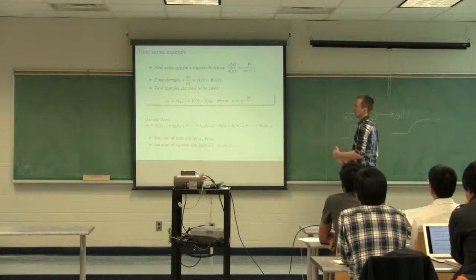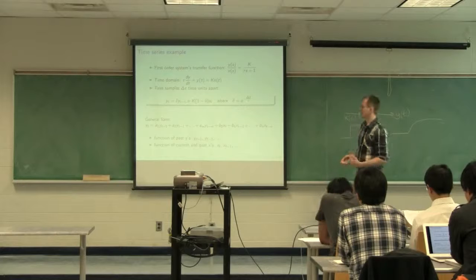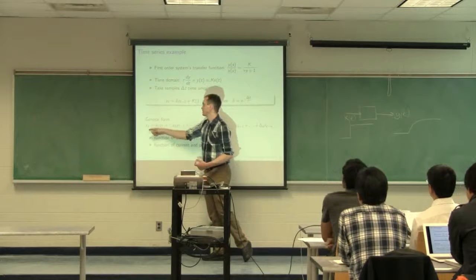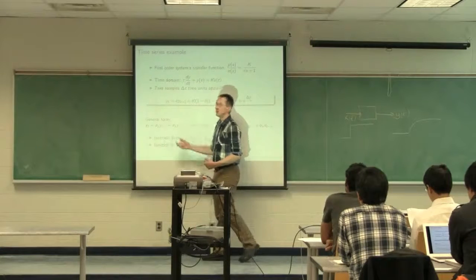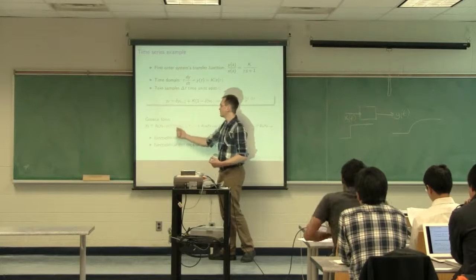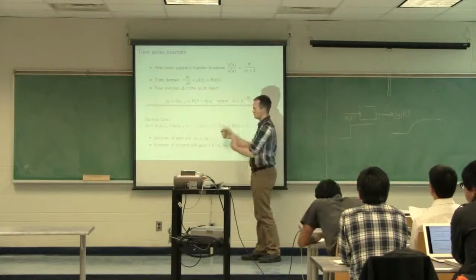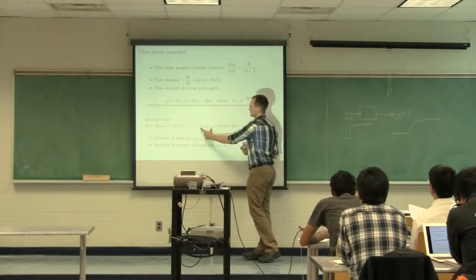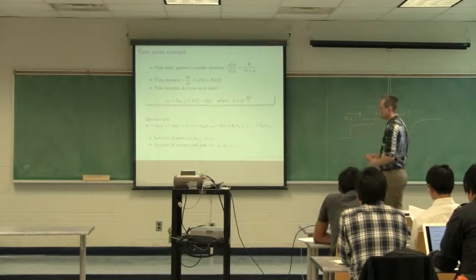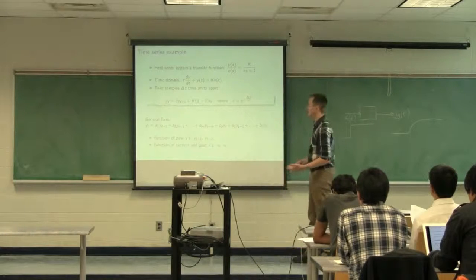In general, for more complicated systems, we can write our output y at time t as a function of y at previous time steps. a1 is a coefficient multiplied by y one hour ago, a2 multiplied by y two hours ago, up to a certain number of points — we don't go back too far. We also have our inputs x: b0 times x_t, b1 times x_{t-1}, and so on. So our prediction is a function of past y's as well as current and past x's.